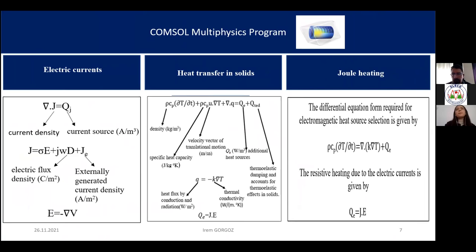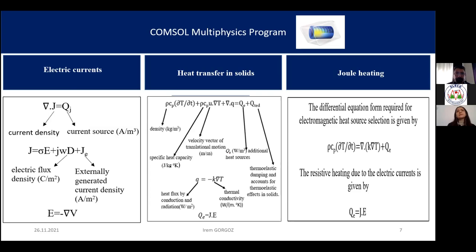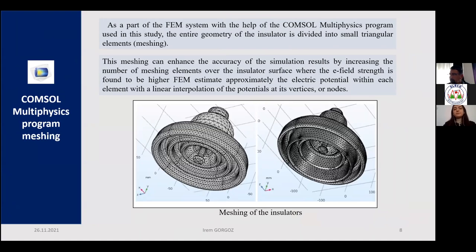COMSOL Multiphysics program using the finite element method approach enables simulation of the target variable to be observed. In the study, electric currents, heat transfer in solids, and Joule-heating physics interfaces were used. The electric current interface is used to compute electric fields, current, and potential distributions in conducting media. The Joule-heating interface describes the process where the energy of an electric current is converted into heat as it flows through layer resistance. The entire geometry of two insulators is divided into small triangular elements in a process called meshing.